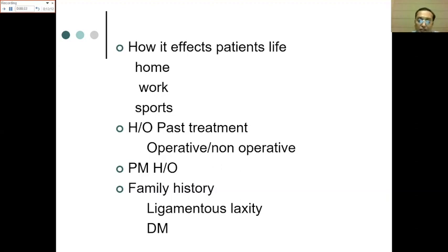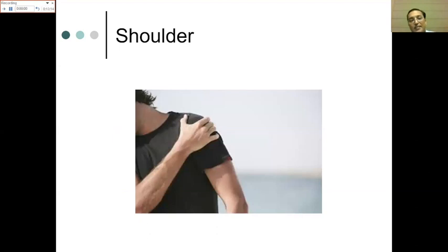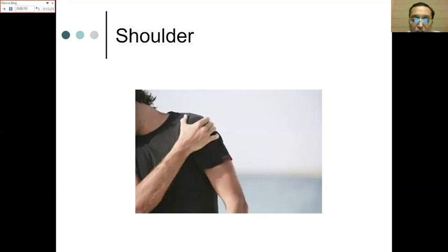Past treatment history — both non-operative and operative — helps to plan further management. Past medical history including diabetes and hyperlaxity, and family history especially of ligamentous laxity and diabetes, are important. With all this, we should have stratified our causes down to four or five probable diagnoses before moving to examination, where we aim to narrow it down to one or two.